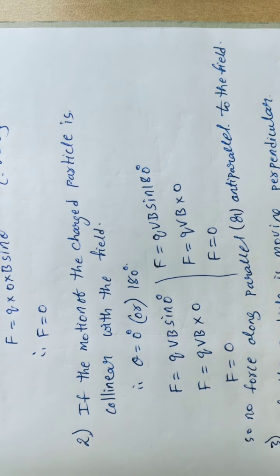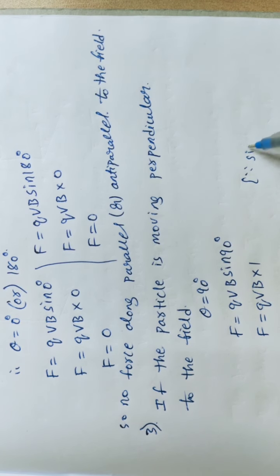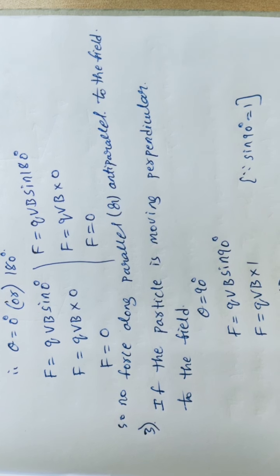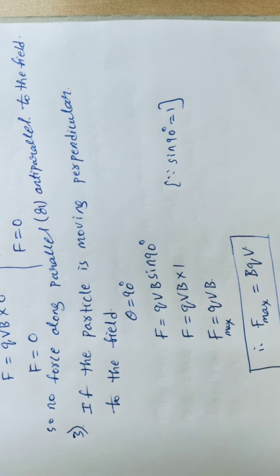Case 3: If the particle is moving perpendicular to the field, theta = 90°. Then F = QVB sin90° = QVB × 1 = QVB. This is the maximum force, so F_max = QVB (also written as BQV). This is a very important formula for solving problems in competitive exams such as NEET and JEE.